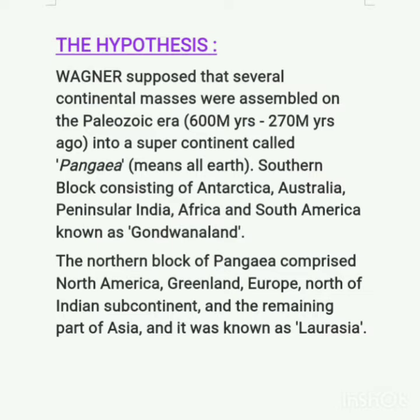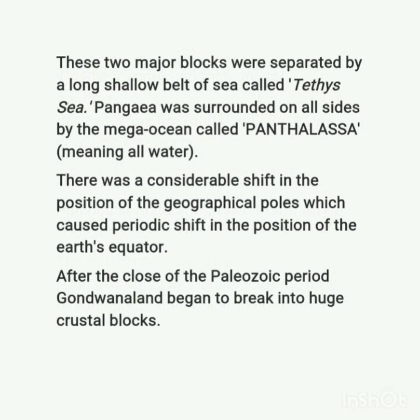There should be a question in your mind about how this drift took place. The continental blocks, which were made up of Sial — silicon and aluminium — used to move over the relatively denser Sima material. These two major blocks were separated by a long shallow belt of sea called Tethys. Pangaea was surrounded on all sides by a mega ocean called Panthalassa.